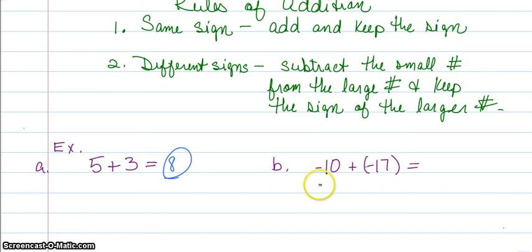The next one, I have negative 10 plus negative 17. Once again, I have the same signs, a negative 10 and a negative 17, and I'm combining them with addition. I'm going to add and keep the sign, which gives me negative 27.